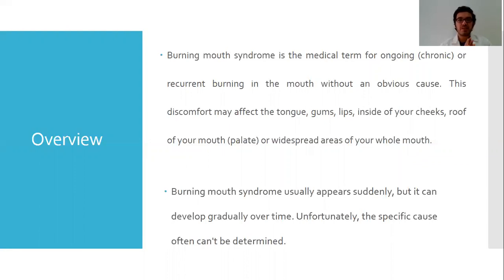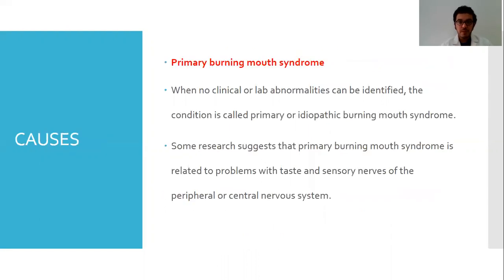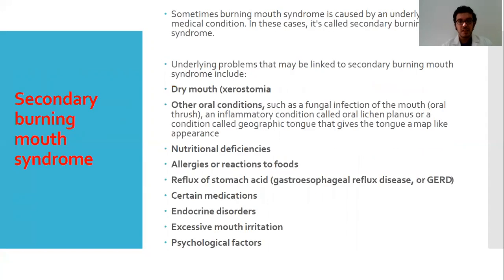There are two types of Burning Mouth Syndrome. The first is called primary Burning Mouth Syndrome, which is idiopathic — meaning there are no clinical or laboratory abnormalities that can be identified with it. Some research suggests that primary Burning Mouth Syndrome is related to problems with the taste and sensory nerves of your central nervous system or some nervous involvement of your brain.